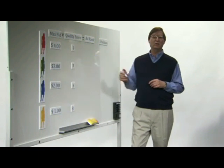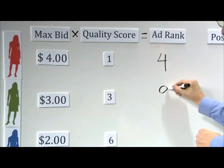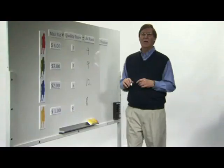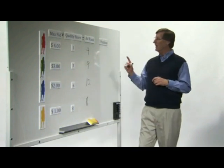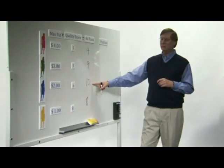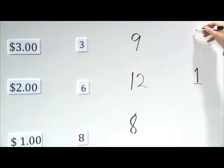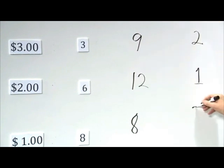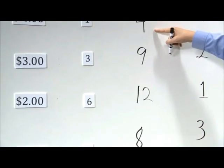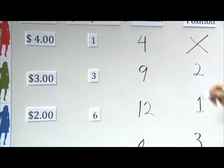And then what we do is we rank the ads by the ad rank. So the best performing ad here is 12. Second best is this ad at 9. Third best is this ad. And up here, the advertiser bidding four has such a low quality that it doesn't get shown at all.